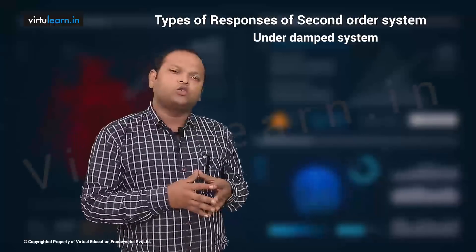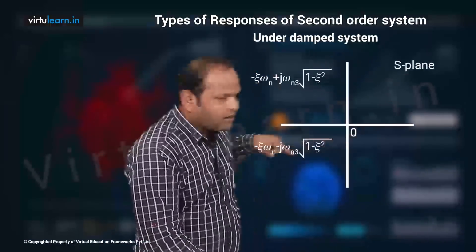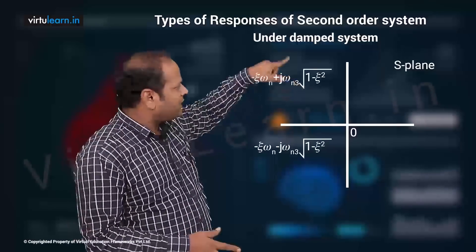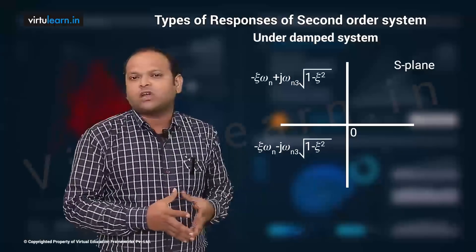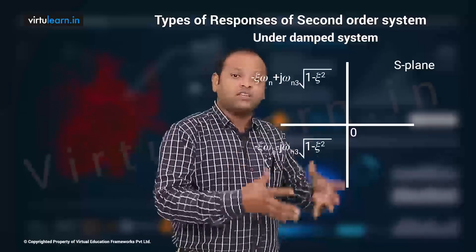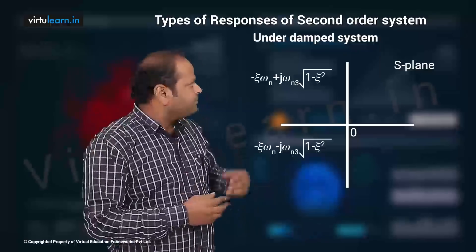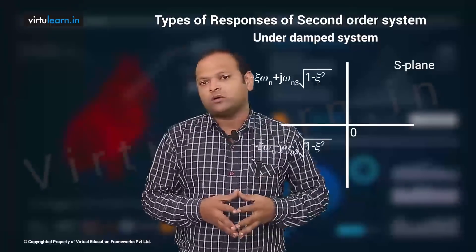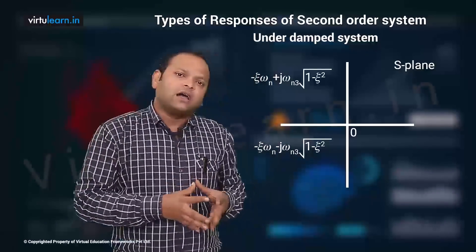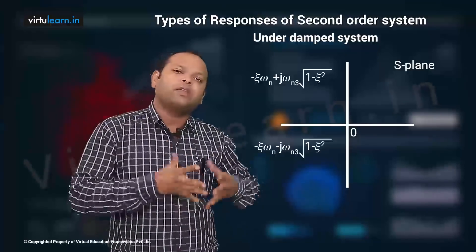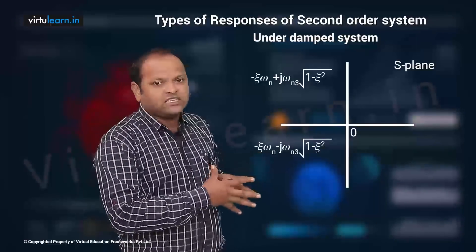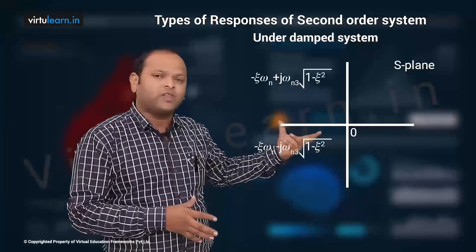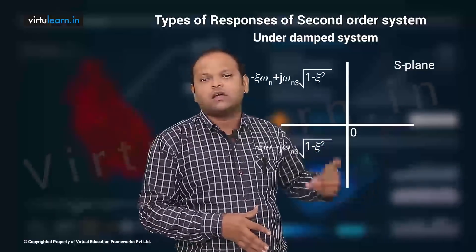Taking these two complex conjugate poles and locating them in the s-plane: the horizontal distance is ζωₙ and the vertical distance is ωd. The response obtained is called underdamped — not enough damping, so oscillations still exist, but they die out after a certain time. In the transient period oscillations are present; in steady state the oscillations have died out.